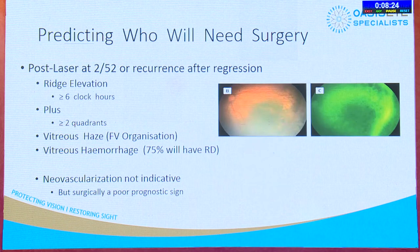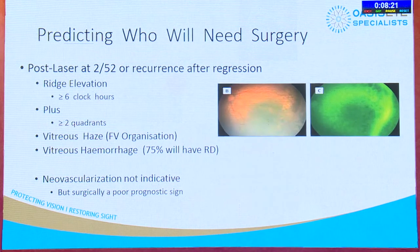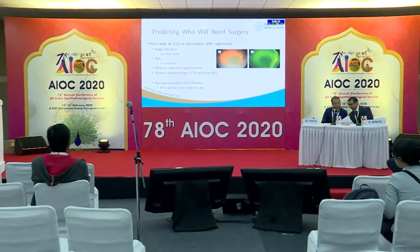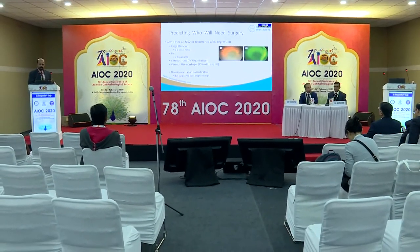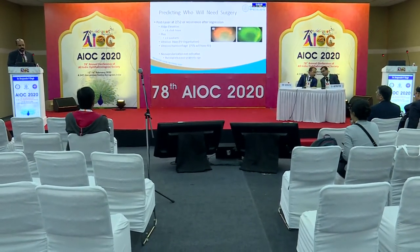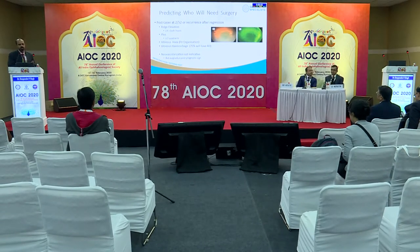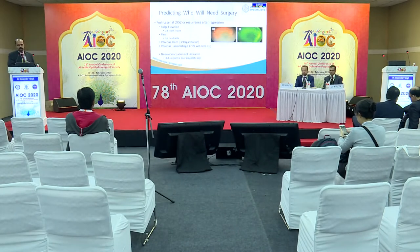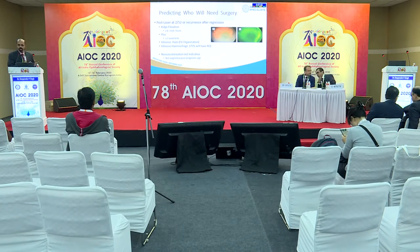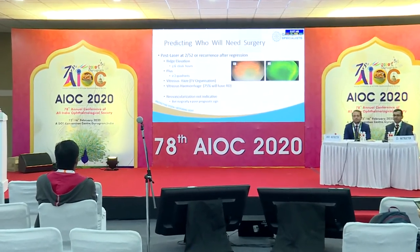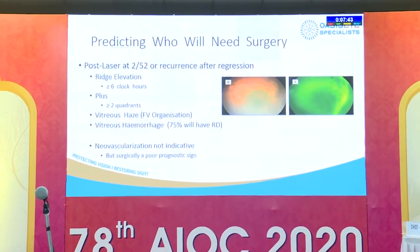From a general ophthalmologist's point of view, predicting who will need surgery: basically those babies who post-laser, at two weeks, show any recurrence after regression, ridge elevation of more than six clock hours, plus disease in more than two quadrants, vitreous haze — representing fibrovascular organization — or vitreous hemorrhage. These are all indications for vitreoretinal surgical intervention in these children.